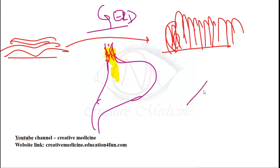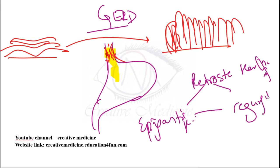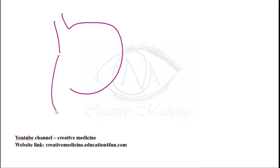Clinical features of GERD include a triad: retrosternal heartburn, epigastric pain, and regurgitation. The most common presentation is long-standing heartburn with regurgitation.